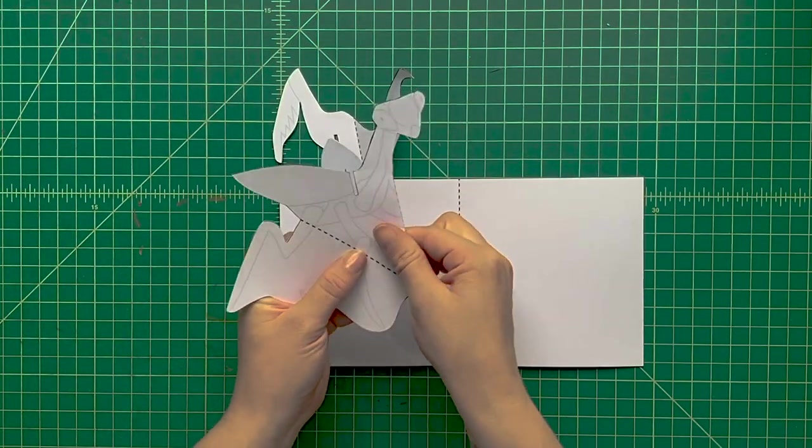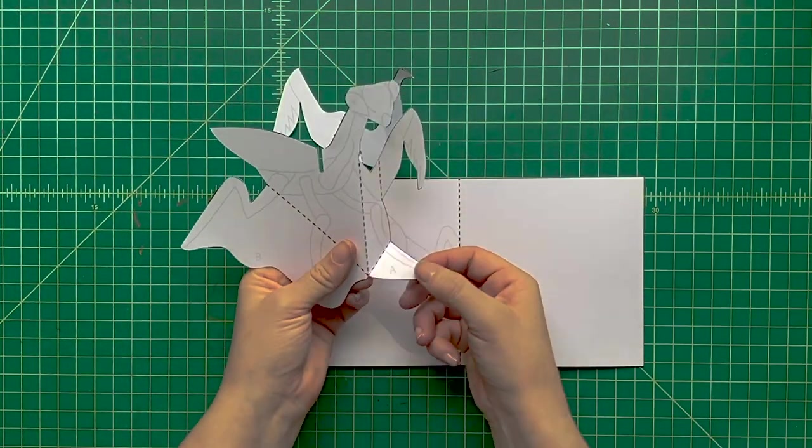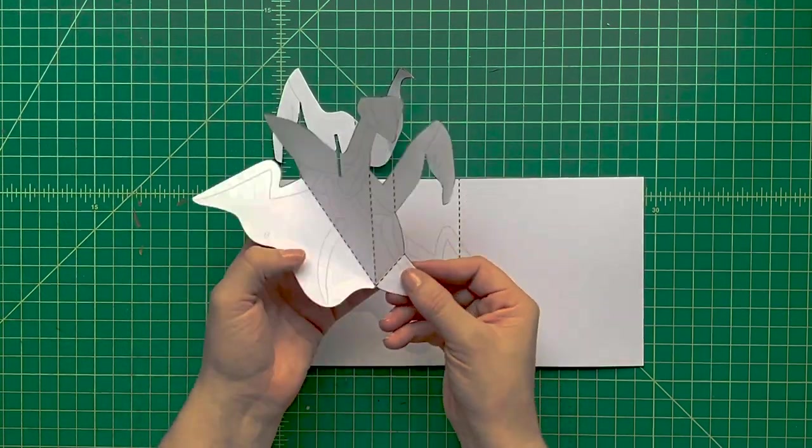Now we're going to fold this large piece like this, once down the middle, and then down here on the tabs.